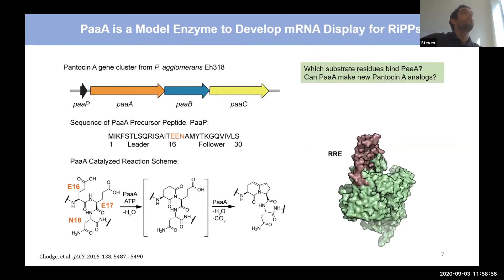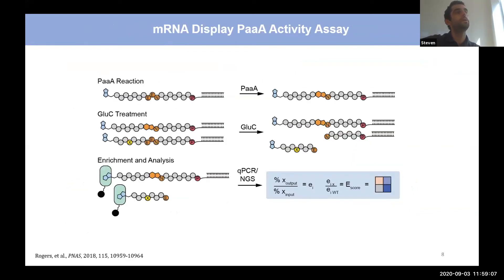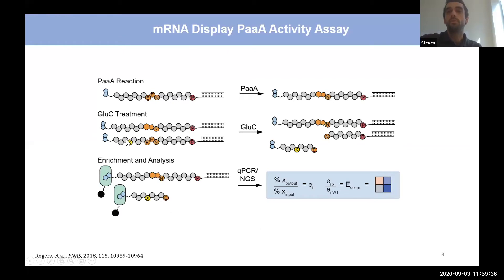We set off to develop an assay to address two questions: which substrate residues are binding PaaA, and can PaaA make new pantocin A analogs as potential new antibiotics? In the assay, we use mRNA display to make PaaA substrates, incorporate unnatural amino acids to place a biotin affinity handle on the N-terminus, and attach the RNA tag at the C-terminus. We treat with PaaA to install the bicycle, then give the enzyme a library of mutations — some of which might kill the reaction, leaving the glutamic acids unmodified.